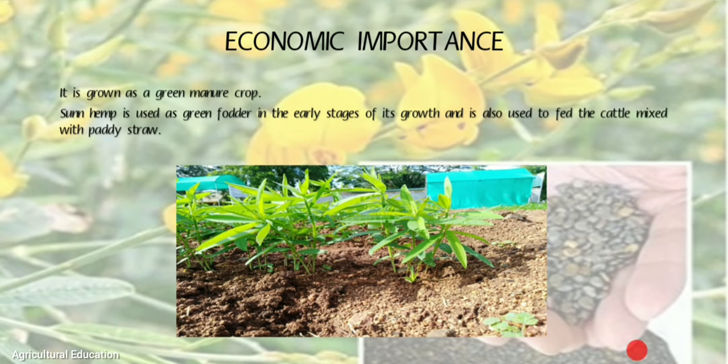Sunhemp is also known as a green manure crop. It is used as green fodder in the early stages of its growth and is also used to feed cattle when mixed with paddy straw.